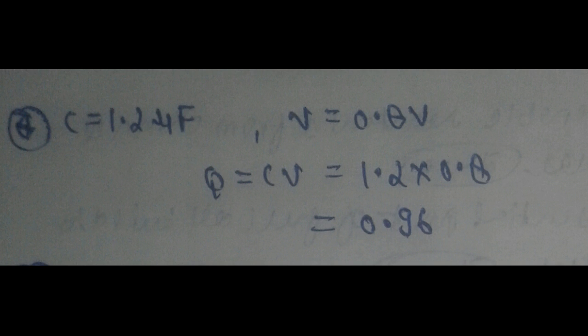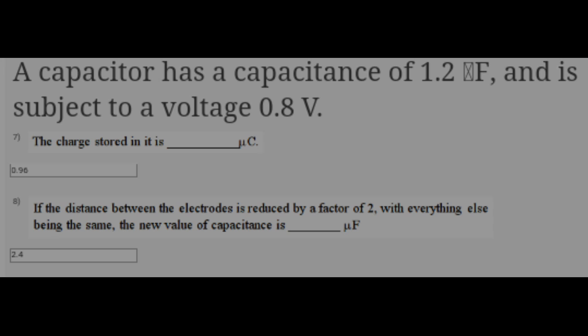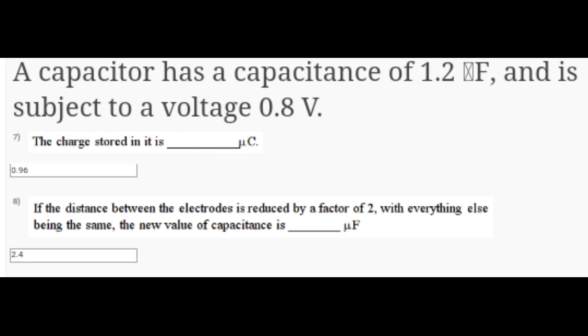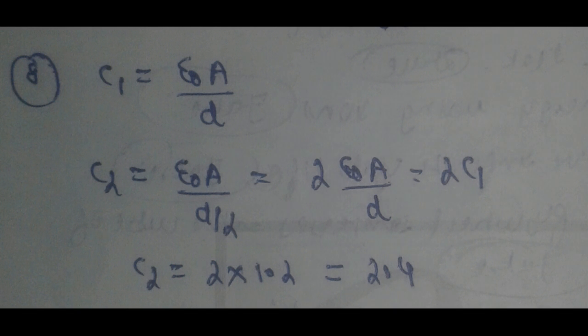Now the eighth question is: if the distance between the electrodes is reduced by a factor of two with everything else being the same, the new value of capacitance is. For the solution of this question, let us see. We have C1, we have the formula for capacitance equal to ε₀A/d.